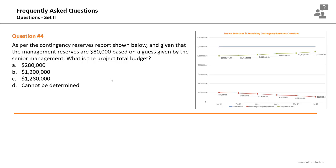Question number four. As per the contingency reserves report shown and given that the management reserves are $80,000 USD based on an estimate given by senior management, what's the project total budget? The total project budget equals the output of the estimate activity costs process plus the contingency reserves plus the management reserves.